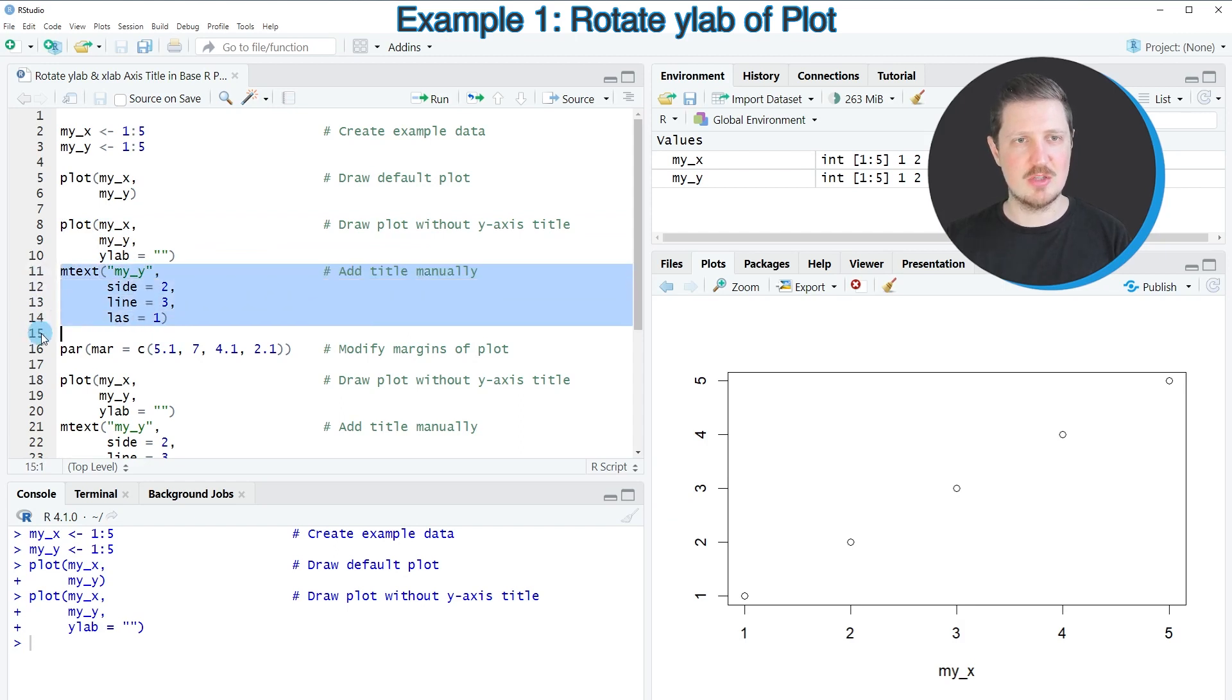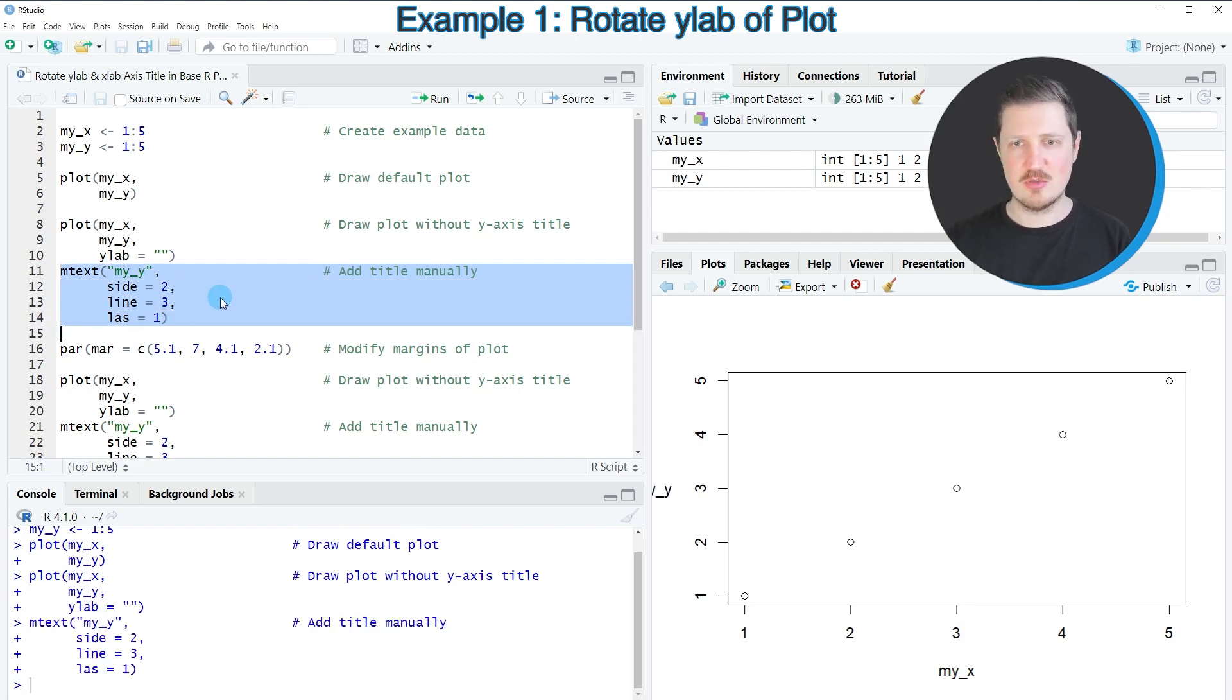In the next step, we use the mtext function to specify this title at the left side of our plot and the position where it should be shown. The last argument specifies the rotation. To show our title horizontally aligned, we specify the last argument equal to 1. After running lines 11 to 14, the label appears again at the left side and is rotated.